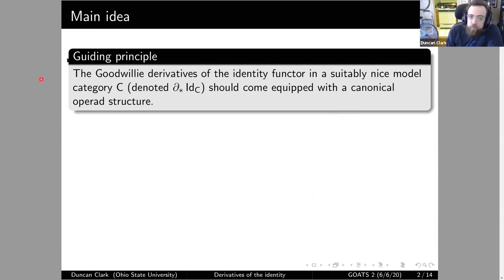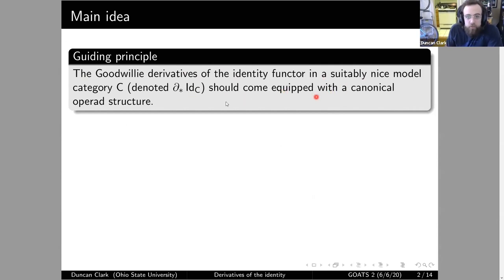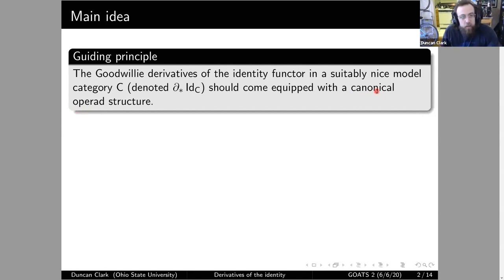The guiding principle underlying this talk and my work is that if you take the sequence of Goodwillie derivatives of the identity functor on a suitably nice model category — for example, the category of topological spaces or the category of algebras over an operad — this sequence should come equipped with extra structure, and that structure is that of an operad, and that it's somehow canonical, ingrained into the derivatives of the identity themselves.